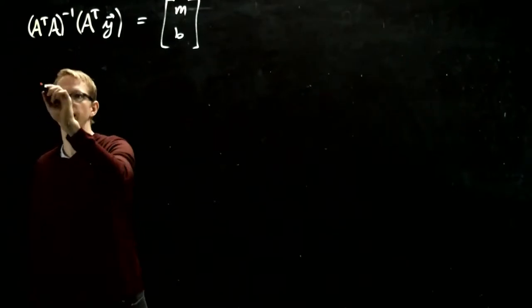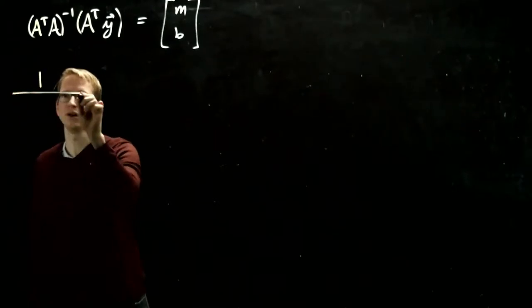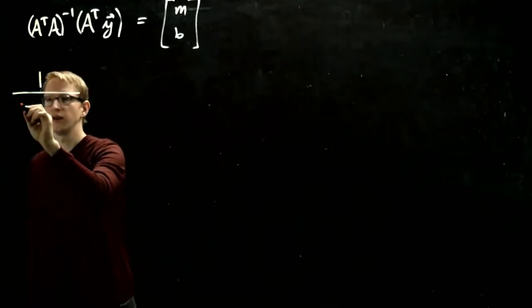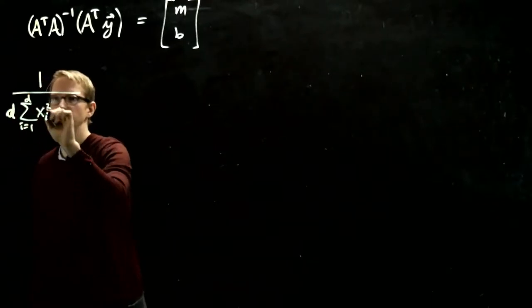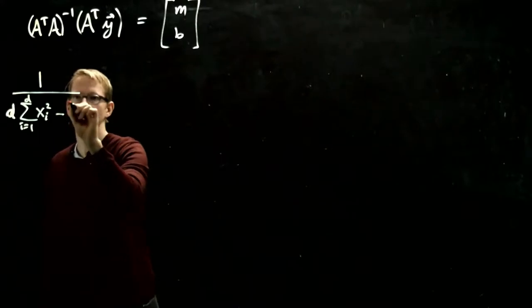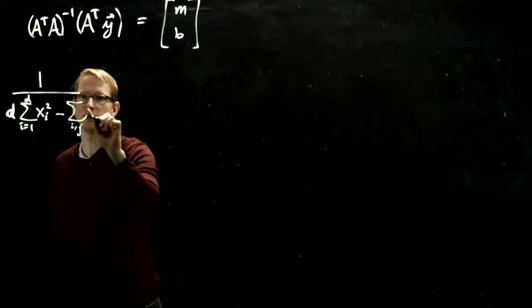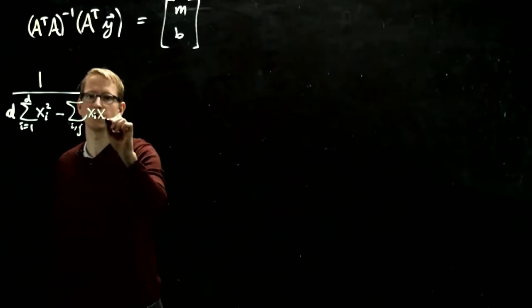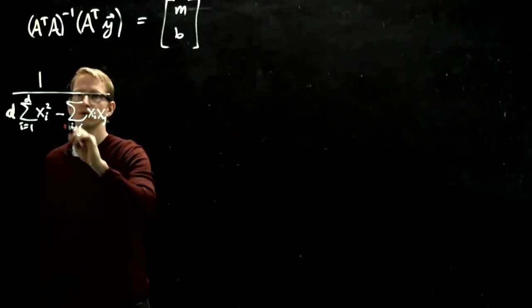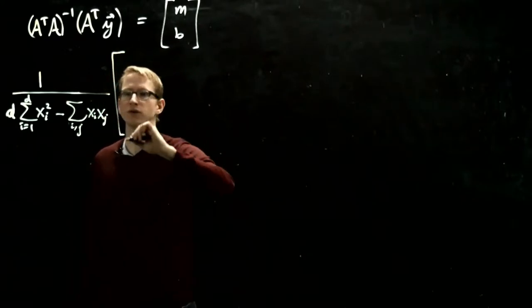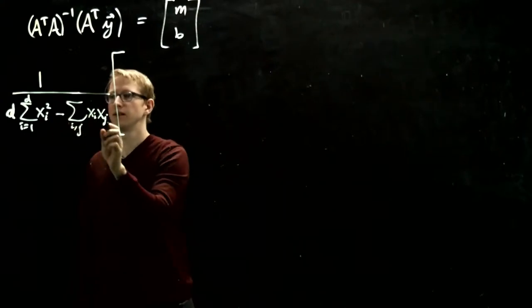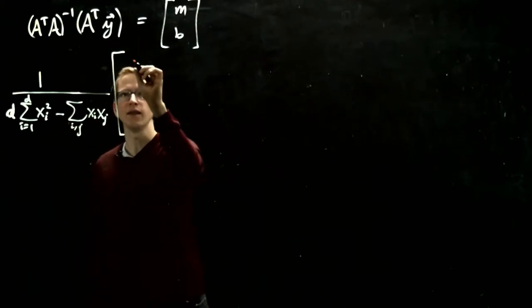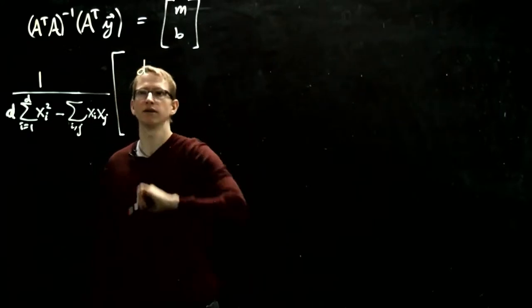And we computed that A transpose A as a matrix equals 1 over the determinant of that matrix which we found was d times xi squared minus xi times xj. So this is 1 over the determinant times our matrix which was, to not conflate these indices let's call these indices k.